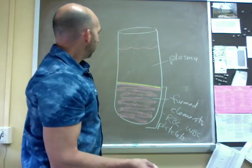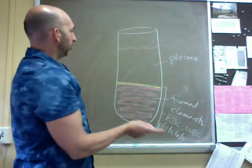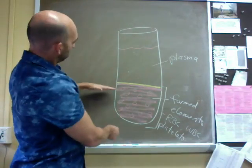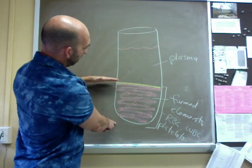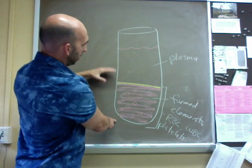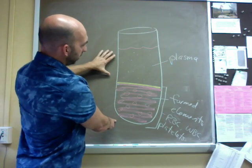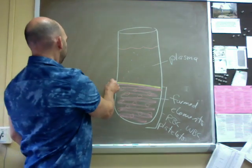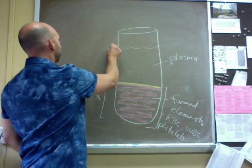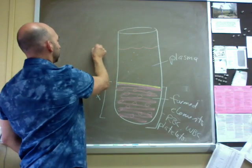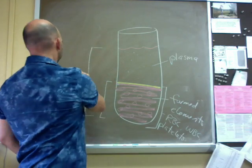For most people, you end up with slightly less than half of the volume of blood taken up by the formed elements and of course that means slightly more than half taken up by the plasma. If we measure this and call that x, and we measure the full height of the blood column here in our tube, we call that y.